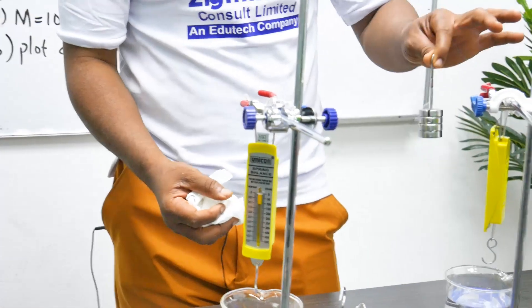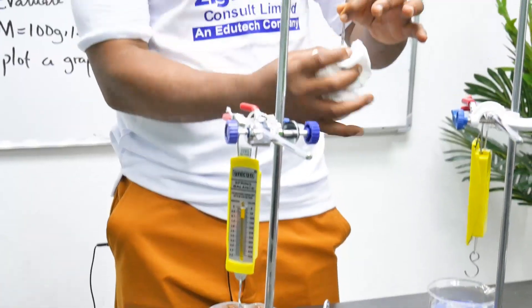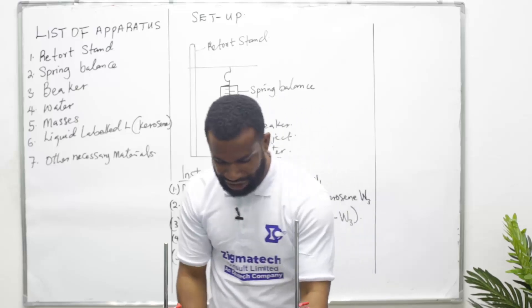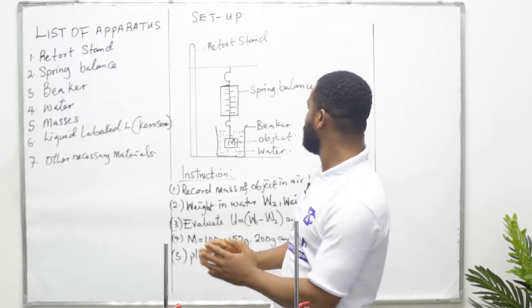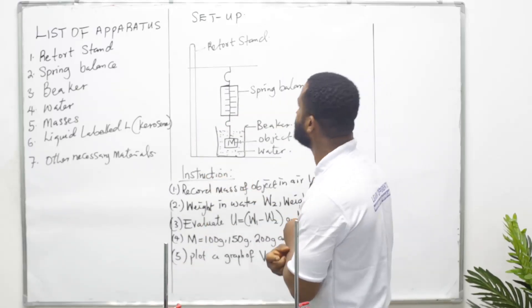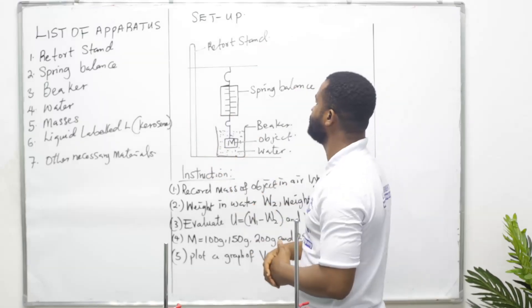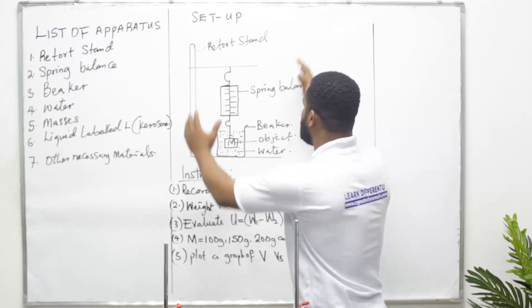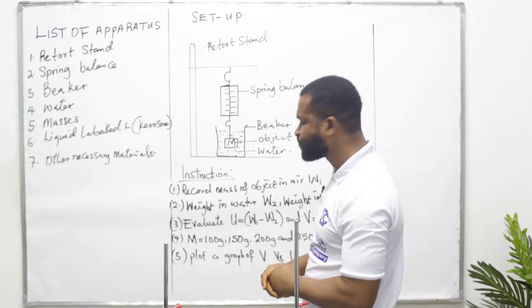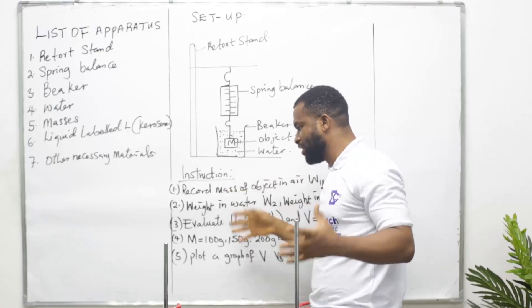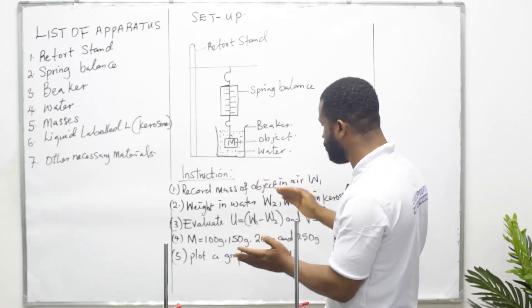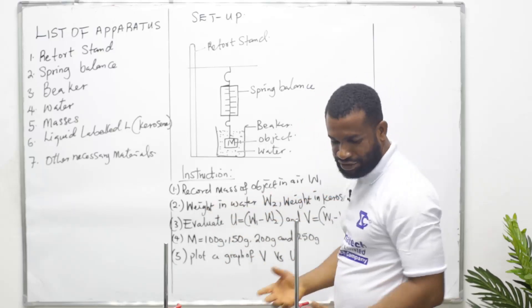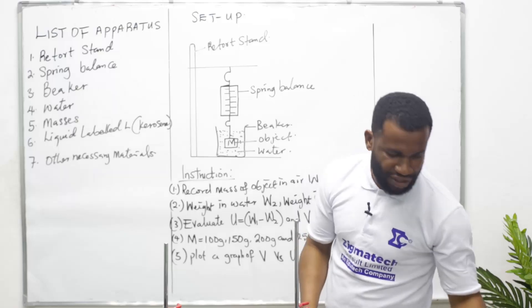And other necessary materials - I decided to come with my tissue so that when I mass in water I can clean very well before I mass in kerosene. If you look at the board you see the setup. The instruction is according to this diagram and we use all these apparatuses to set up this as shown on the board. The instructions are many but I decided to crop it down to the ones that are most important.